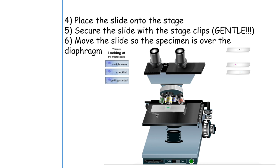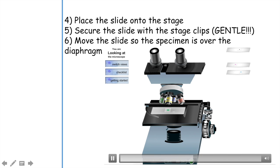After the slide is secured on the stage, you want to move this slide so that the specimen is over the diaphragm. Notice there are these knobs that allow you to move the slide up and down. You want to place it over this hole right here because this is where the light is going to be coming in for you to see the object.